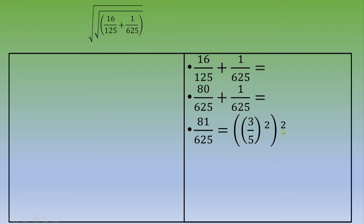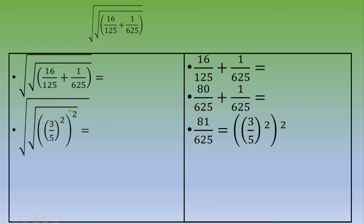Now you plug this value into the original square root: square root of 3 over 5 squared squared. This is equal to square root of 3 over 5 squared, which is 3 over 5.